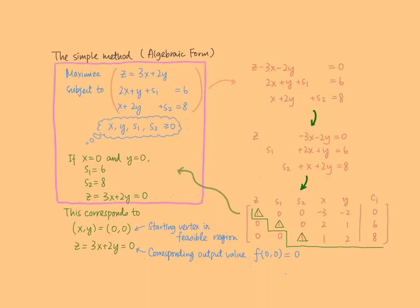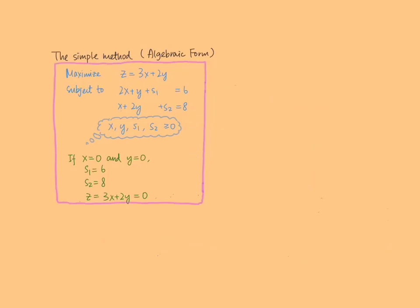This corresponds to the optimization problem and a solution we obtain in this stage. Now we make a judgment on whether we have reached an optimal solution by checking whether we can further increase the output value. We do so by checking the sign of the coefficients of each variable in the objective function. Since all variables are non-negative, having 3x and 2y means that increasing x or y will increase z. Therefore we have not yet reached an optimal solution. Since 3 is greater than 2, the value of z will hopefully increase faster if we increase x.